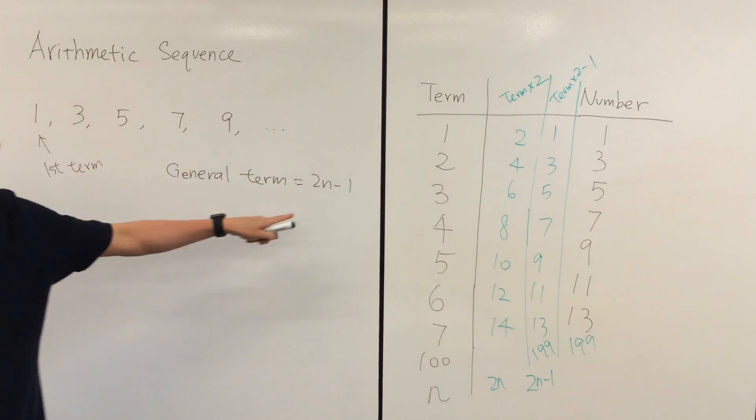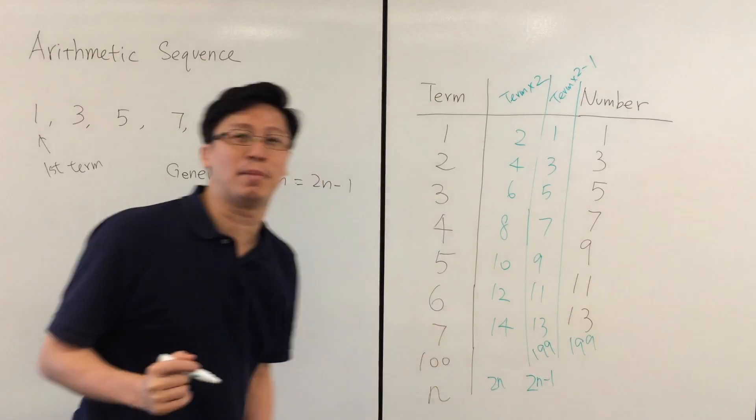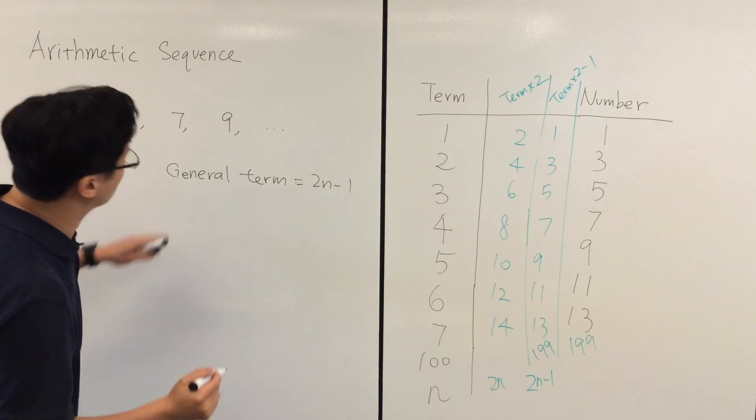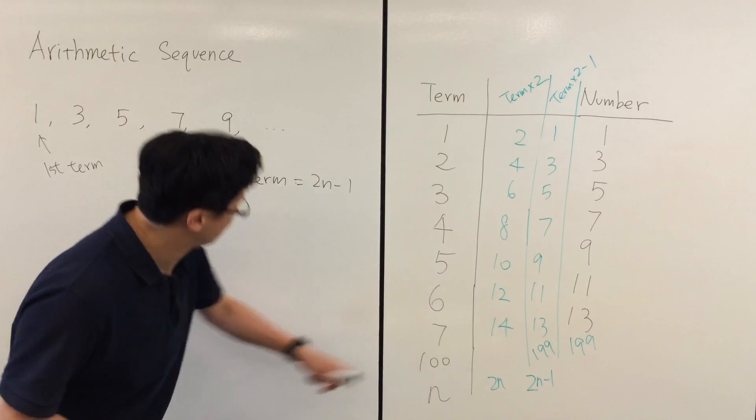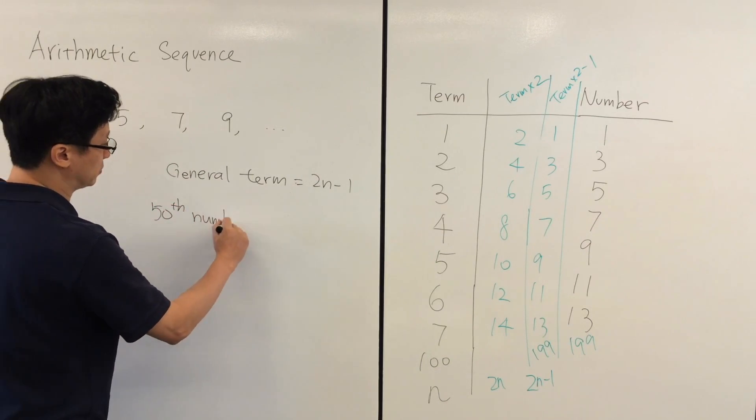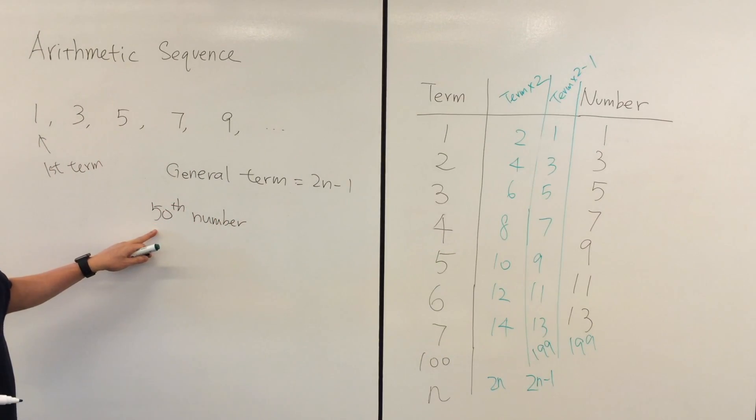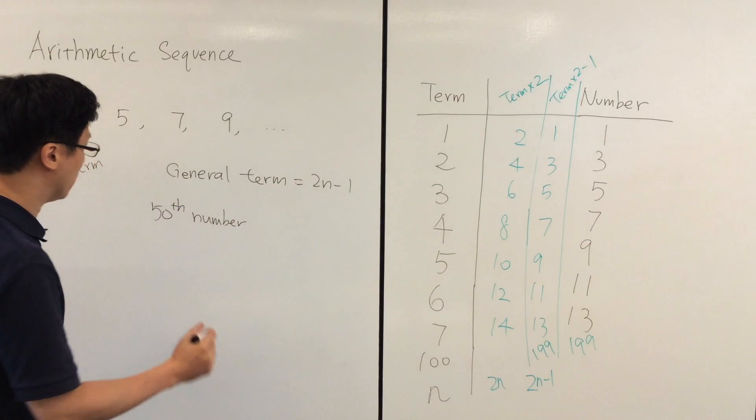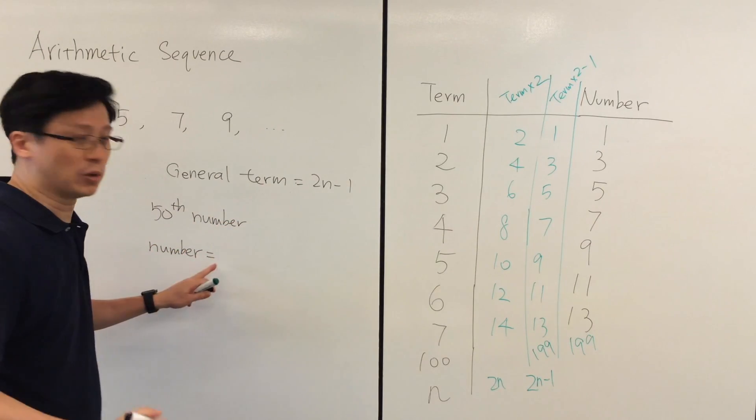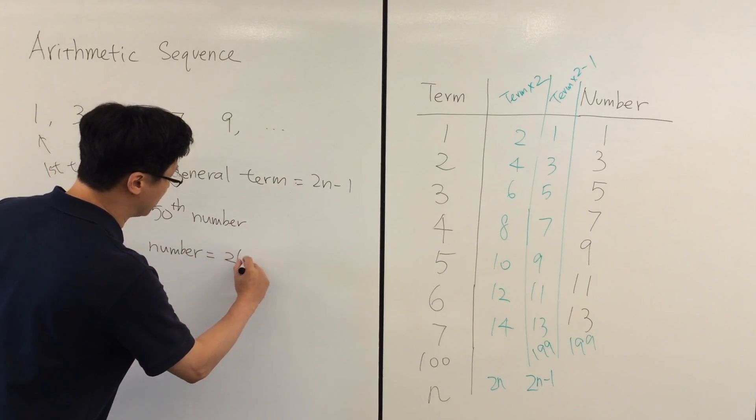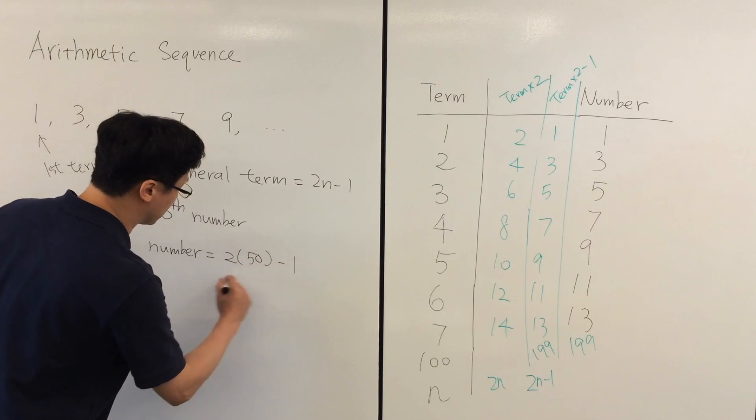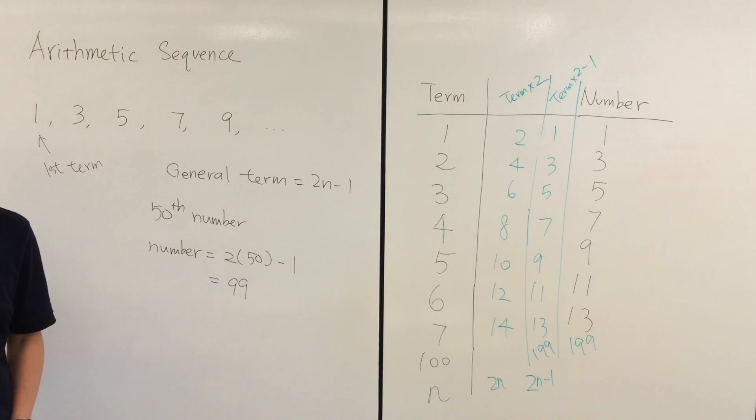So how can we make use of the general term 2n minus 1? Let's say if I want to find the 50th number, we simply substitute 50 into the general term which is 2 times 50 minus 1, and this gives 99.